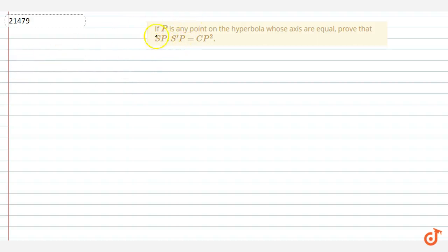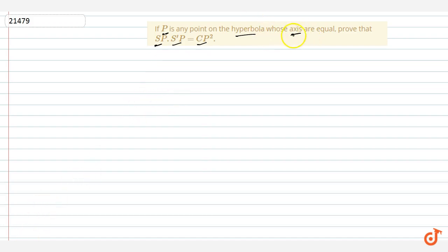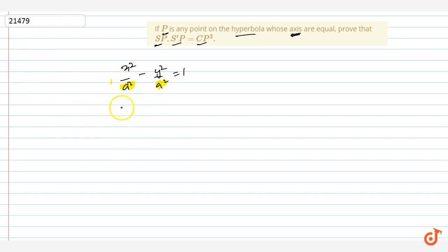In this question, we are given that if P is any point on the hyperbola whose axes are equal, we have to prove that SP and S'P — the distances from point P to the foci — satisfy SP·S'P = CP². Since the axes are equal, the equation of the hyperbola is x² over a² minus y² over a² equals 1, which simplifies to x² minus y² equals a².